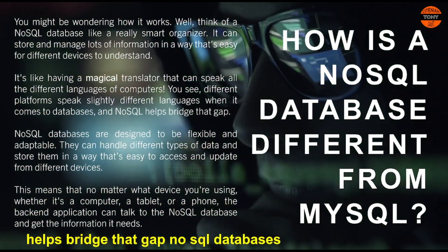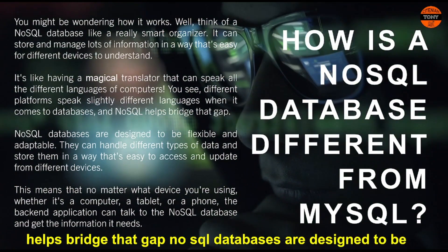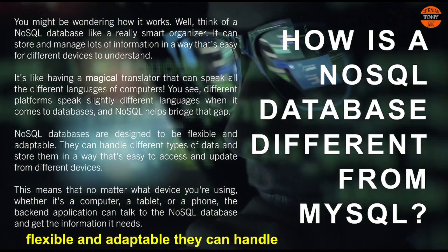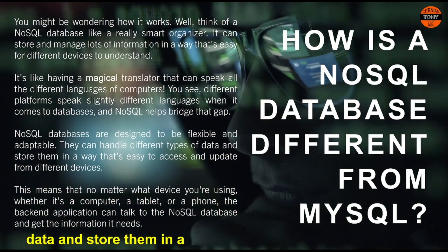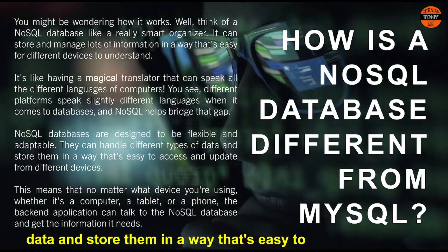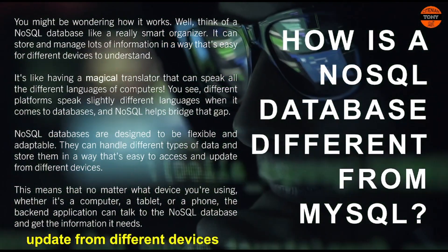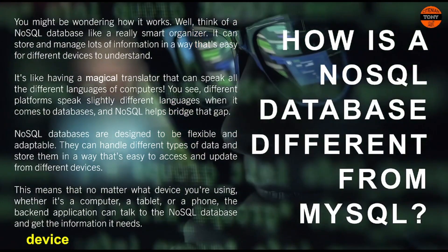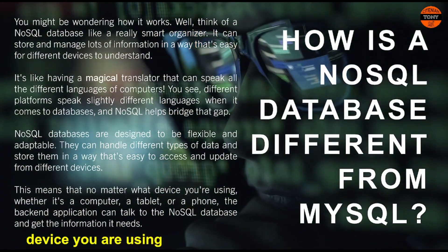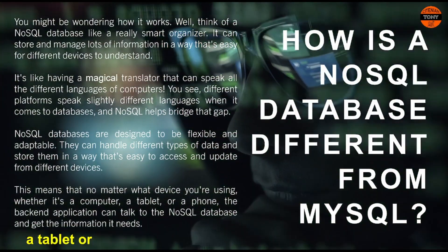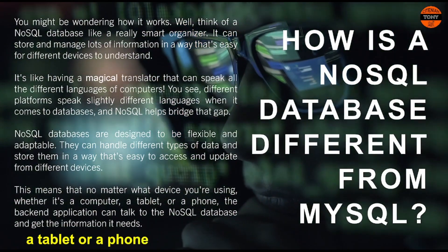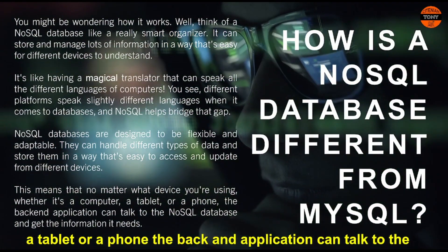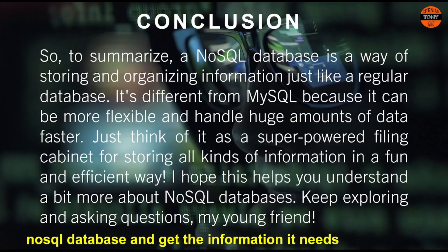NoSQL Databases are designed to be flexible and adaptable. They can handle different types of data and store them in a way that's easy to access and update from different devices. This means that no matter what device you're using — whether it's a computer, a tablet, or a phone — the backend application can talk to the NoSQL Database and get the information it needs.